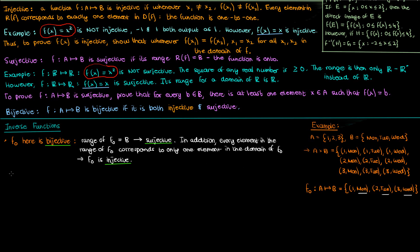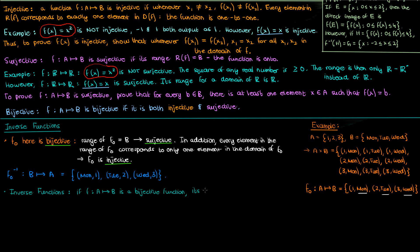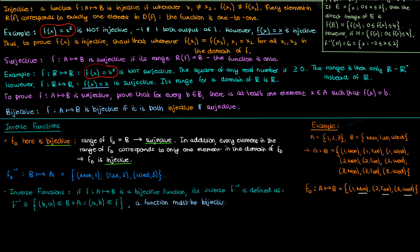When we switch the order of elements in the ordered pairs of this bijective function f₀, we get an inverse function f₀⁻¹, which maps elements in b back to elements in a. An inverse function f⁻¹ of a bijective function f is the set of ordered pairs (b, a) in the Cartesian product b cross a, such that the ordered pair (a, b) was an element of the original function f. Bijective is clearly specified in this definition — if a function is not bijective, it does not have a valid inverse.